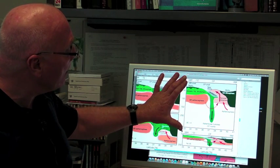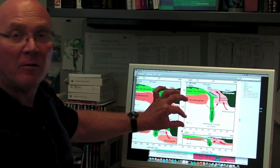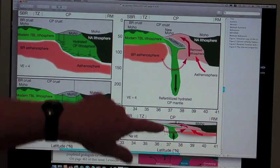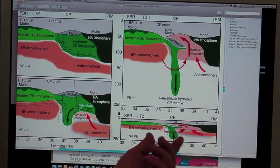And it looks very dramatic in this image, but this image has a 4 to 1 vertical exaggeration. If you look in the 1 to 1, it looks far more reasonable. This is just a little blob coming off.